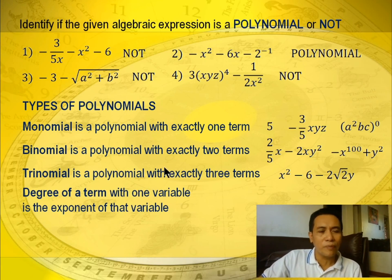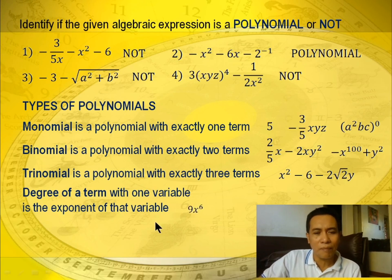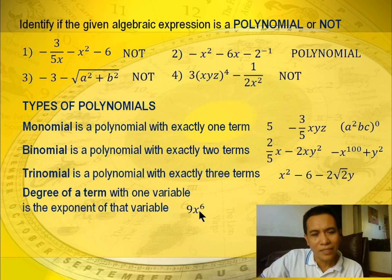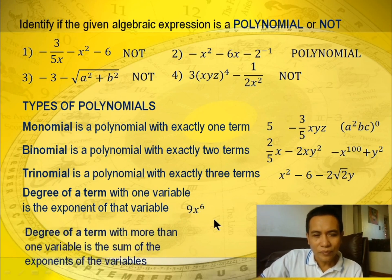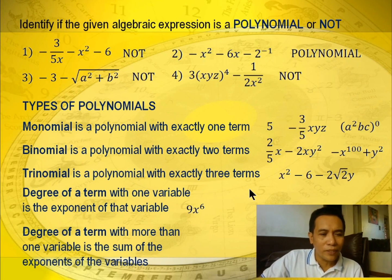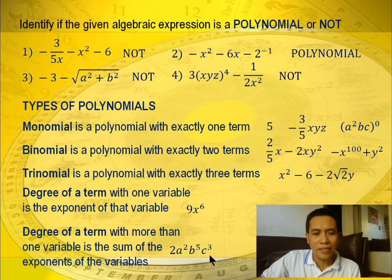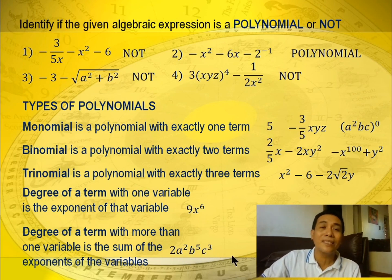The degree of a term with one variable is the exponent of that variable. For example, 9x raised to 6 — the variable is x and the exponent is 6, so 6 is the degree. The degree of a term with more than one variable is the sum of the exponents of all the variables. For example, 2a squared b to the 5th c cubed — add all exponents: 2 plus 5 plus 3 equals 10, so the degree is 10.